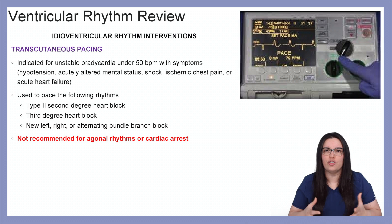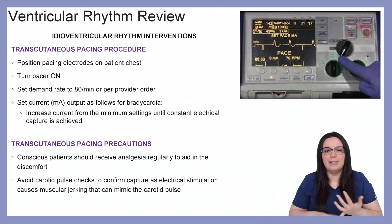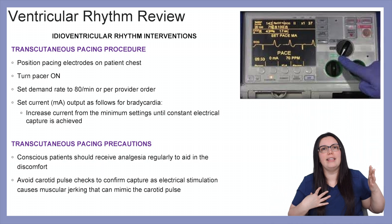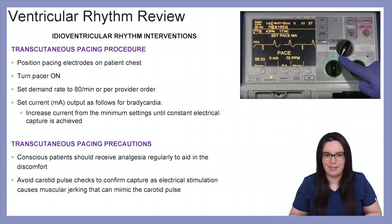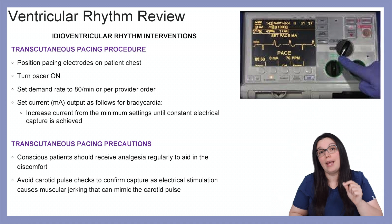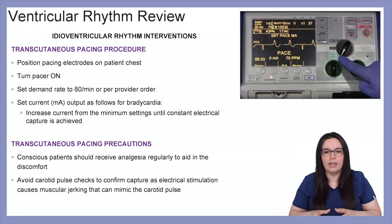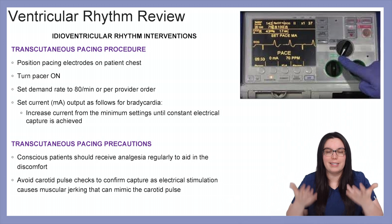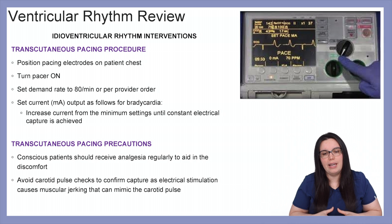For CPR: if it's shockable we're going to shock; if not we just give medications and provide CPR. To set up transcutaneous pacing, position the pacing pads as instructed by the packaging — normally one pad goes over the right anterior chest wall and the left pad goes on the left mid-axillary line next to the heart. Turn on the pacer and set the demand rate to 80 beats per minute or whatever the physician orders. Set the current MA output, increasing from minimum until electrical capture is consistent, which would be a wide QRS and a T wave after each pacer spike, indicating ventricular pacing. Common current ranges between 50 to 80 MAs.